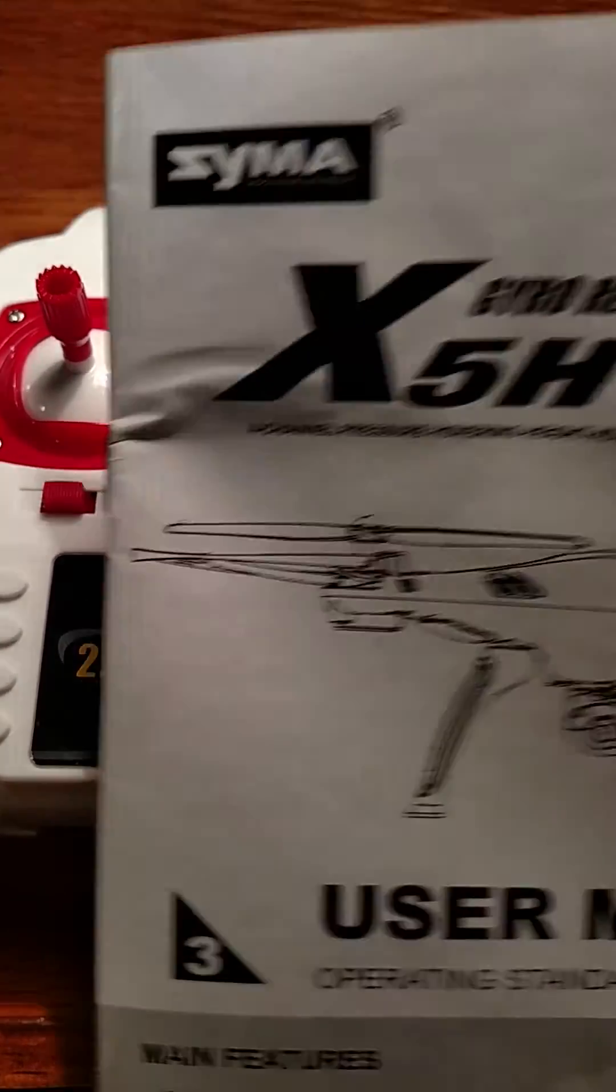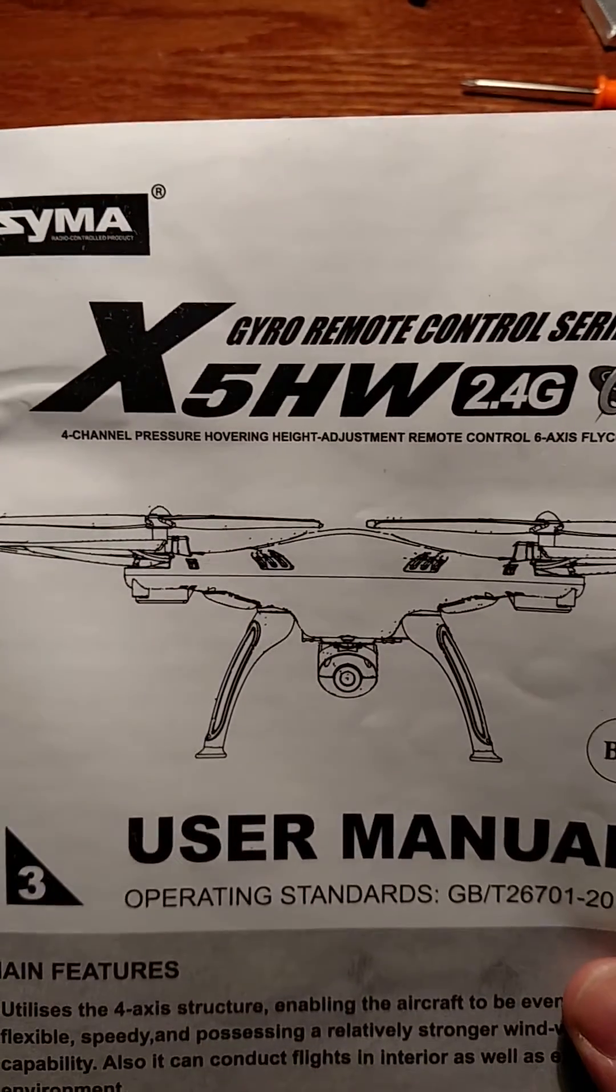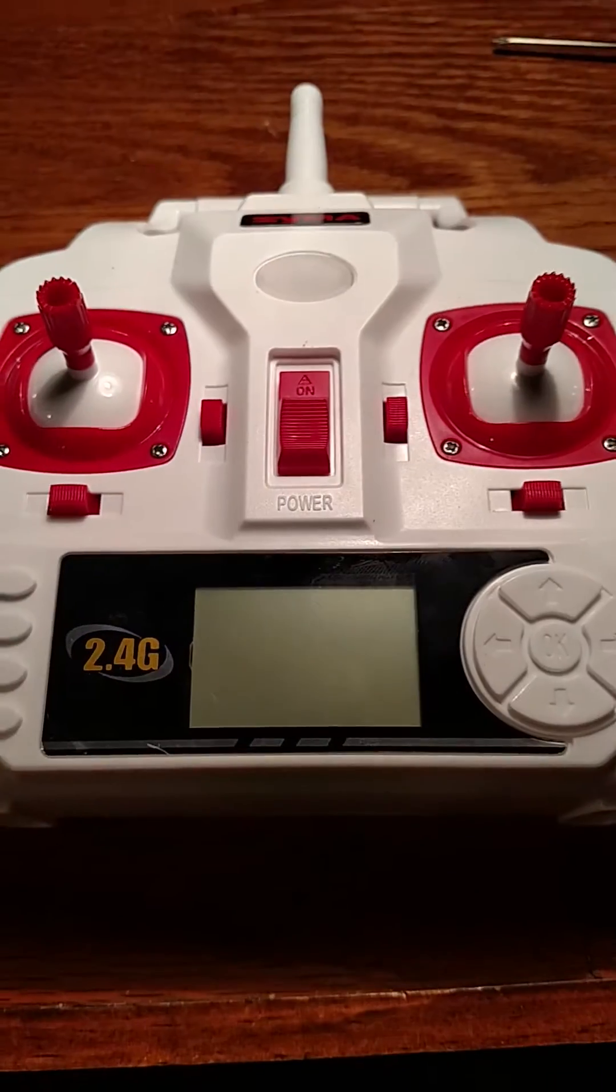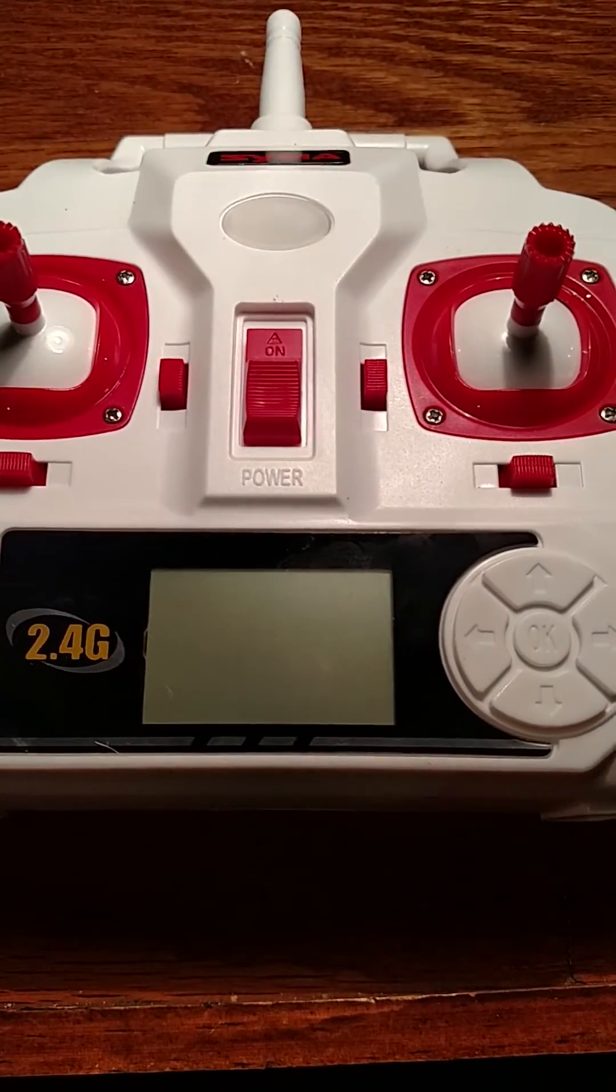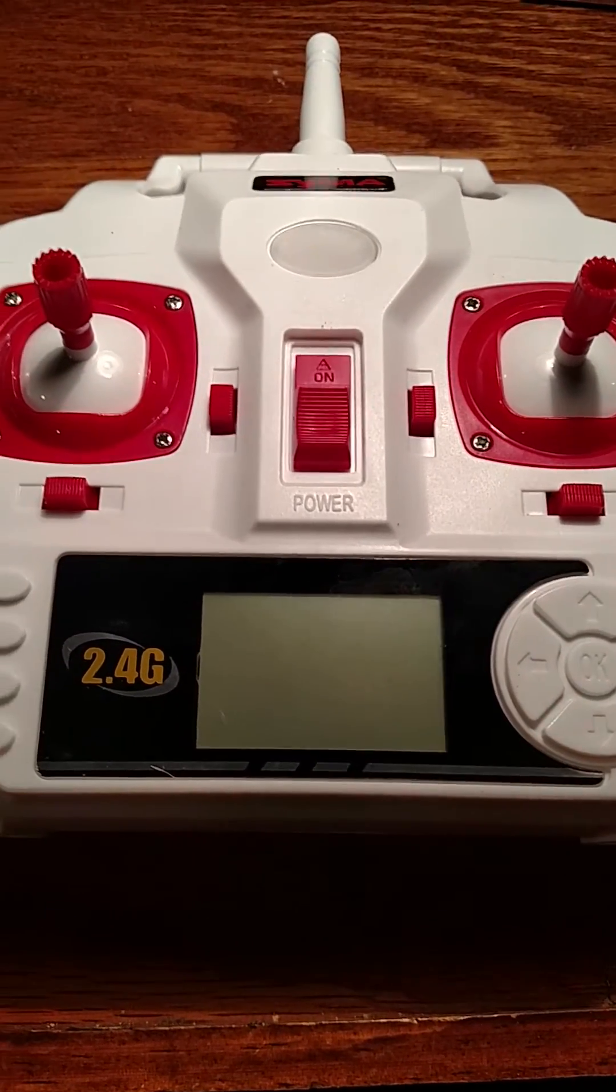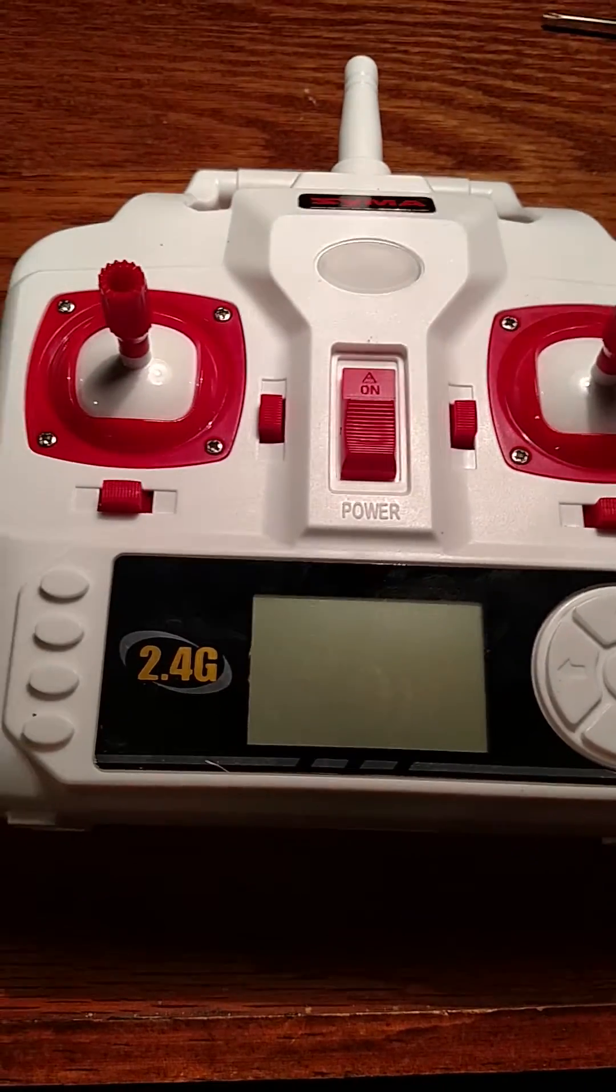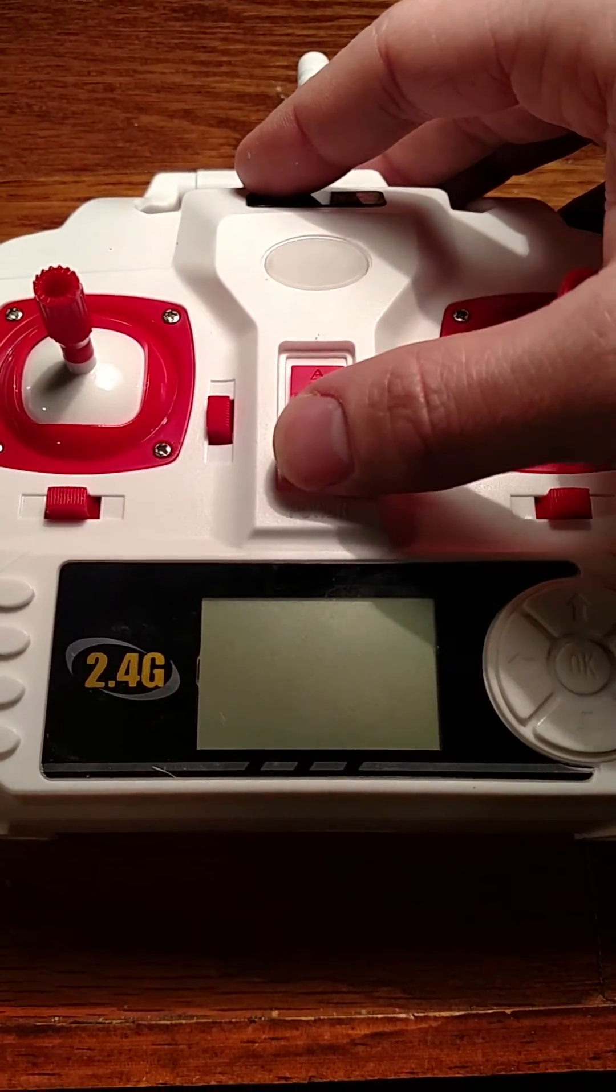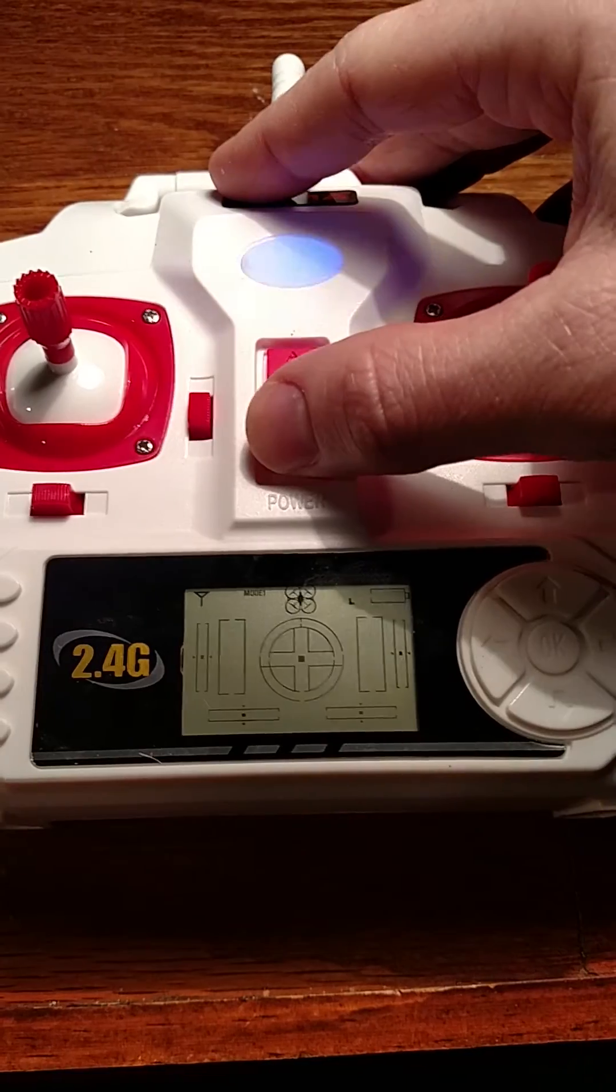Here's the issue I'm having with the Sima X5 HW drone controller. I've tried calibrating and I've got fresh batteries in it, and whatever I do, the trim on it seems to automatically push to the right as soon as I link it up.